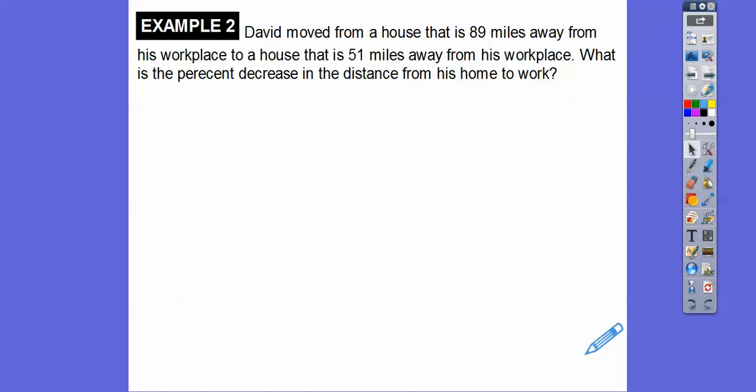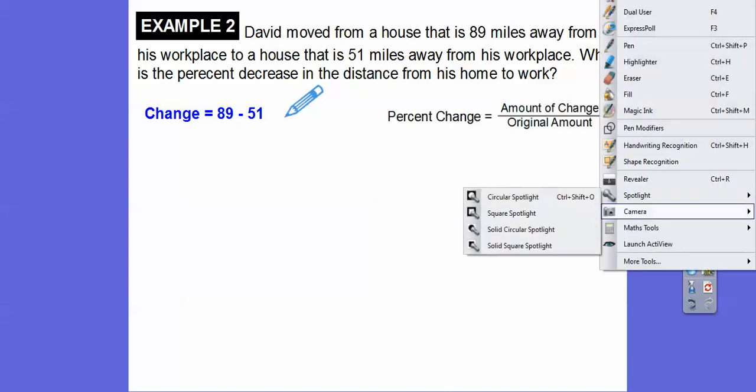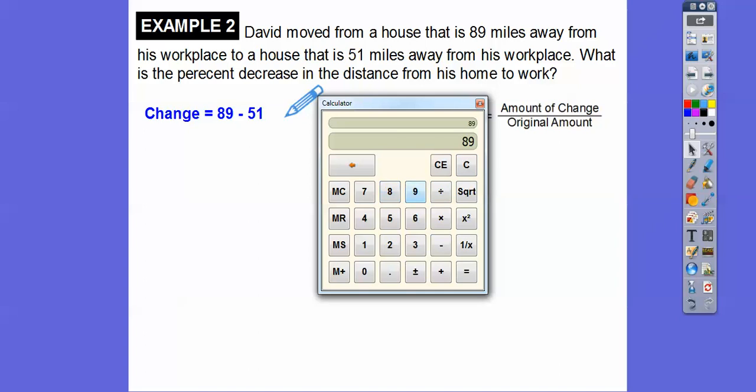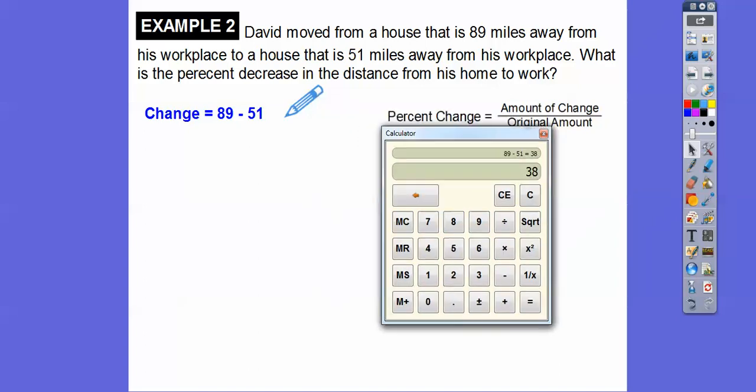David moved from a house that is 89 miles away from his workplace to a house that is 51 miles away from his workplace. What is the percent decrease in distance from the home? We still do the amount of change divided by the original number. The change is the bigger number minus the smaller number. The original number is the first number, 89. So we're going to subtract those. 89 minus 51. Let me get my calculator here and we'll go 89 minus 51. That's going to get us how much it changed. 38.